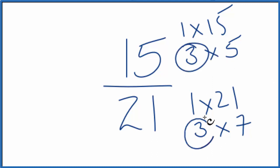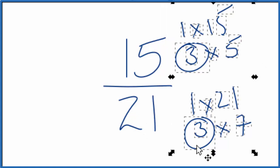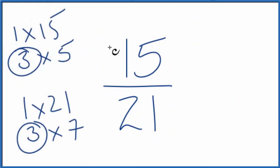The multiple that's in common here is 3, so we'll divide 15 by 3 and then 21 by 3. That should simplify the fraction 15 over 21. Let's move these here, give ourselves some room. 15 divided by 3 gives us 5.